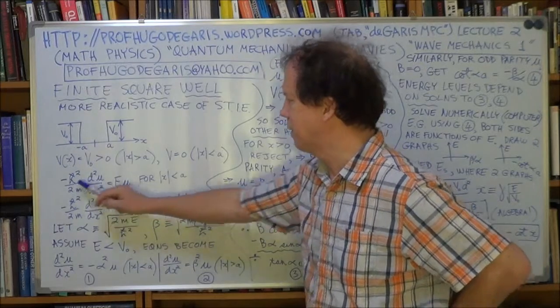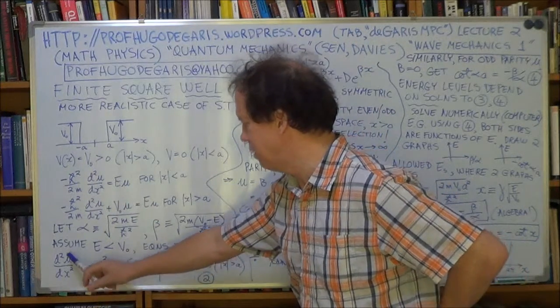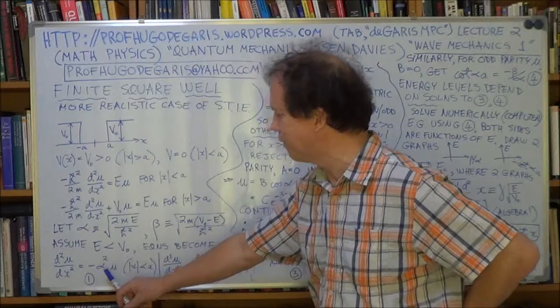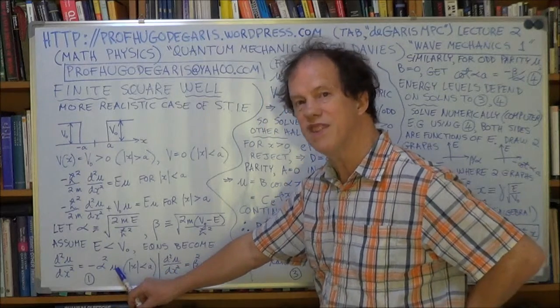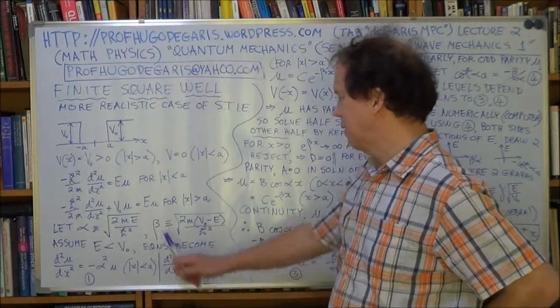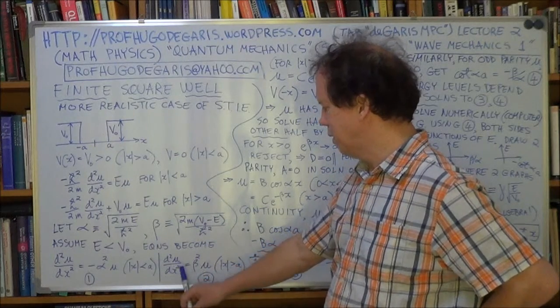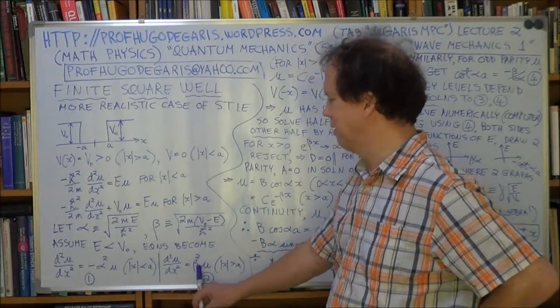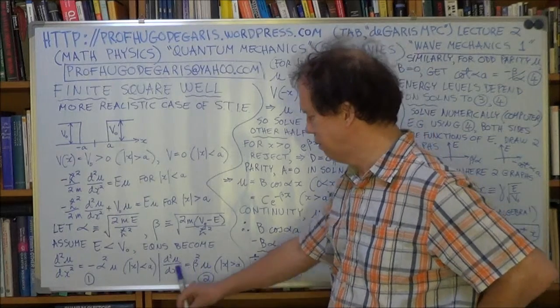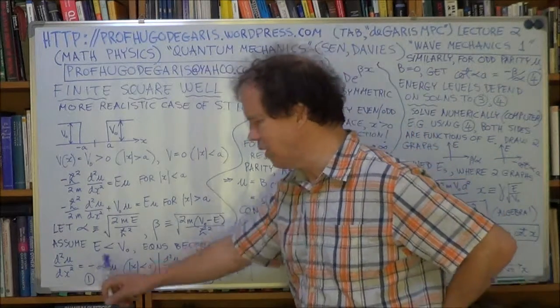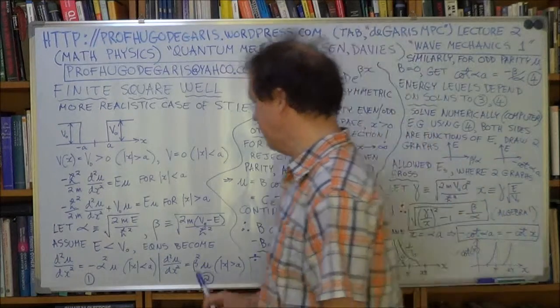That means you can rewrite this equation as just dU dx squared is minus alpha squared U, much easier. And the second equation here just becomes dU squared dx squared is plus beta squared U. So these two equations have simplified right down.